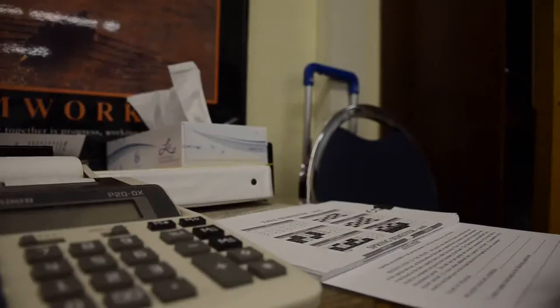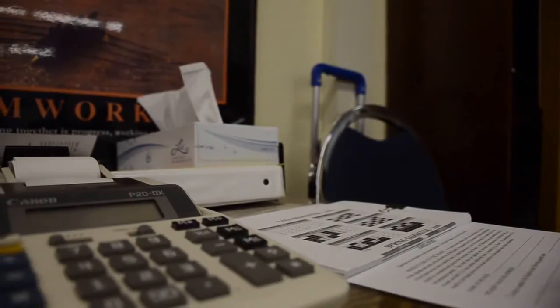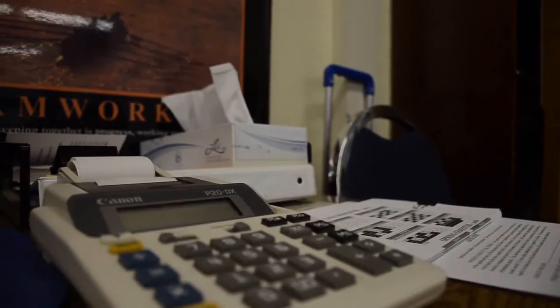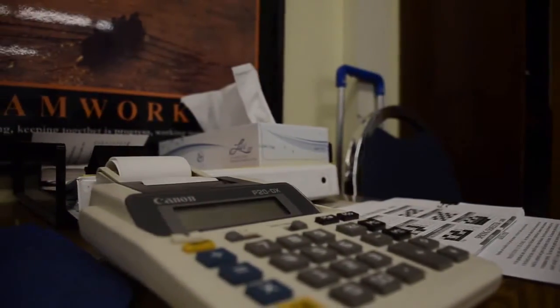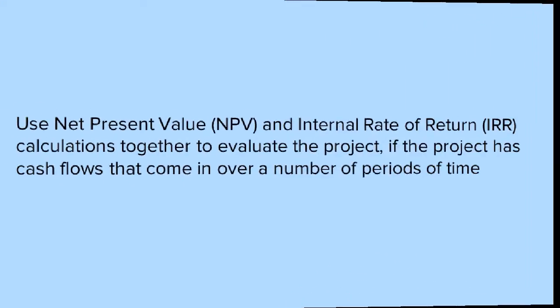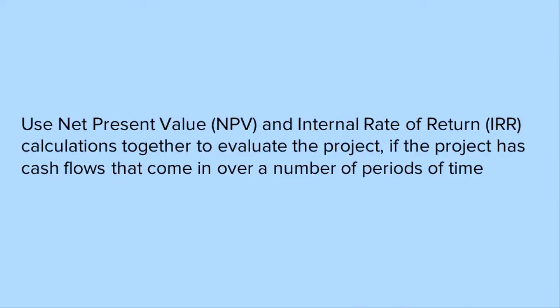CBA has its flaws. Cost-benefit analysis struggles as an approach where a project has cash flows that come in over a number of periods of time, particularly where returns may vary from period to period. In these cases, use net present value and internal rate of return calculations together to evaluate the project, rather than cost-benefit analysis. These also have the advantage of bringing the time value of money into the calculation.